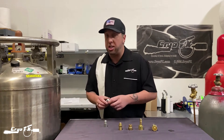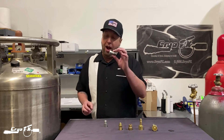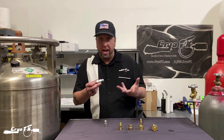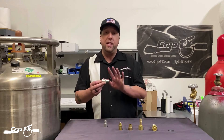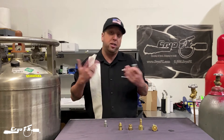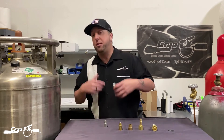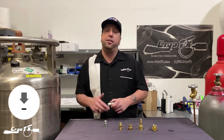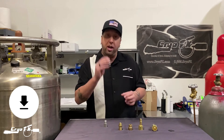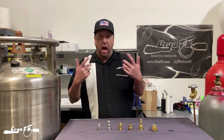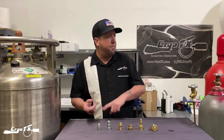These fittings are going to look the same — the sizes will just be a little bit different. You'll have the female JIC 37 degree over to a male NPT, half inch or three-eighths inch, whatever you need for the adapter. Of course Cryo Effects — which is why you're on this channel — we have and sell these adapters, link in the description below.